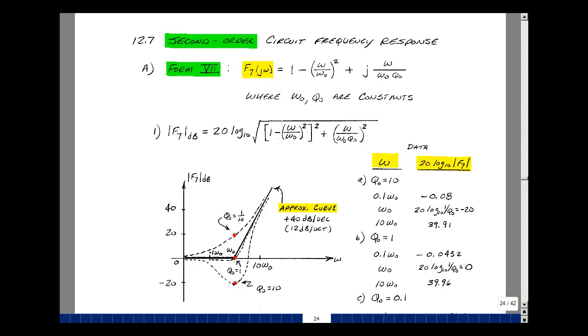Define form 7 as 1 minus (omega/omega naught)² plus j(omega/omega naught)/q naught, where omega naught and q naught are constants. Let's sketch the magnitude, so it's 20 log base 10 of the square root of the real part squared plus the imaginary part squared. We have two variables, omega naught and q naught, so let me pick specific values of q naught and see what happens as a function of omega and omega naught.